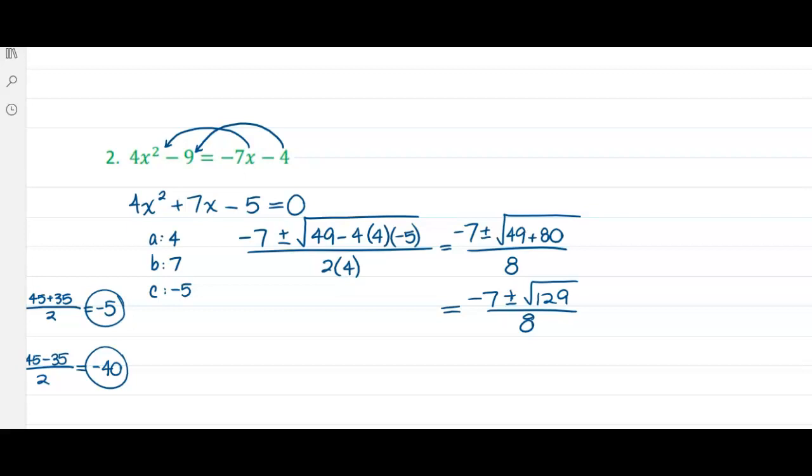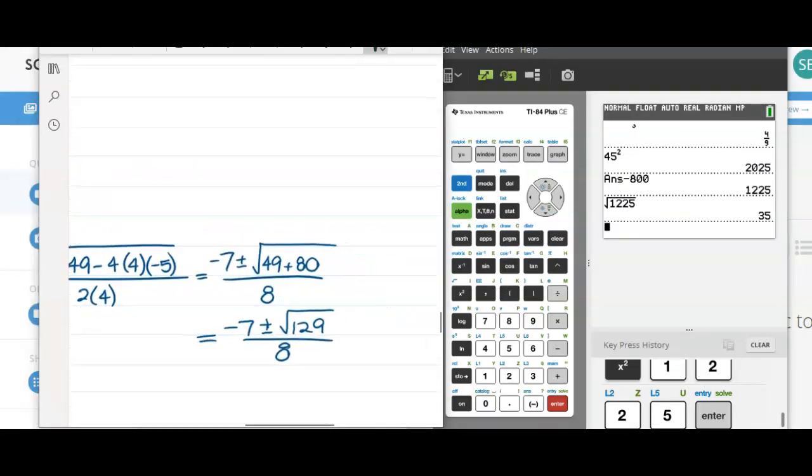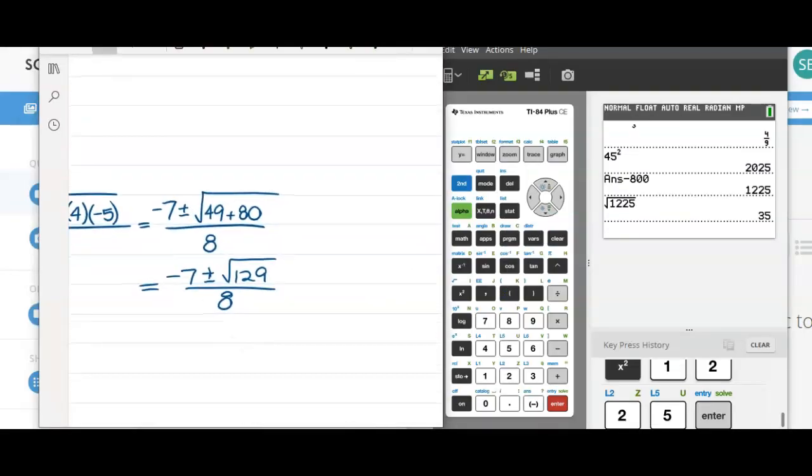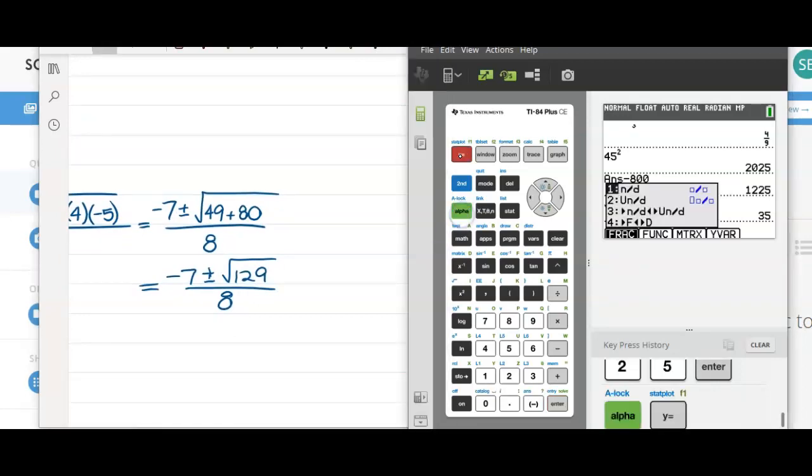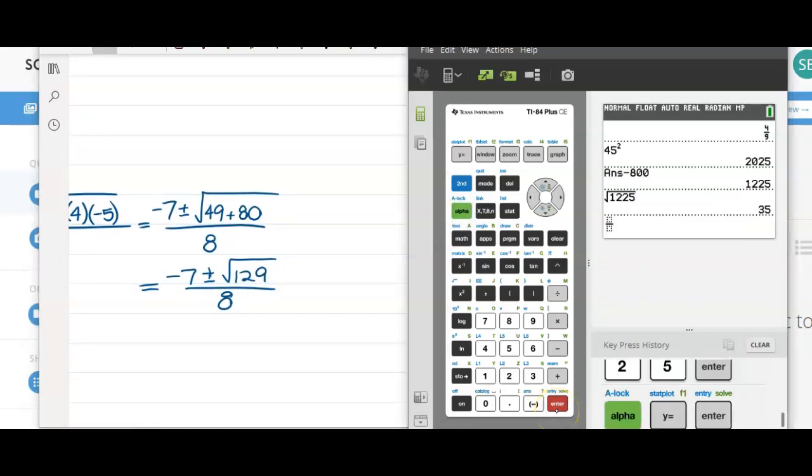The only thing that we could possibly do at this point, if it was an actual word problem, would be to figure out this answer to the nearest hundredth or nearest thousandth. So let's try that. Because normally we would like to keep our answer very precise.